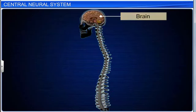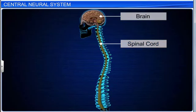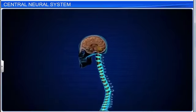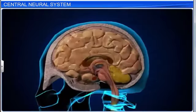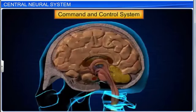The brain and spinal cord are collectively known as the central neural system. However, it does not include muscles and nerves which arise from the spinal cord and innervate the body. The brain is the central information processing organ of our body, and it acts as the command and control system.